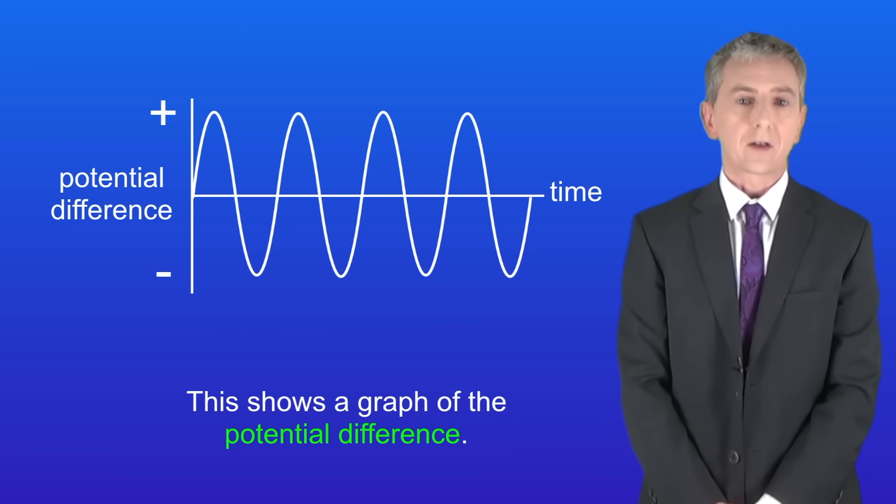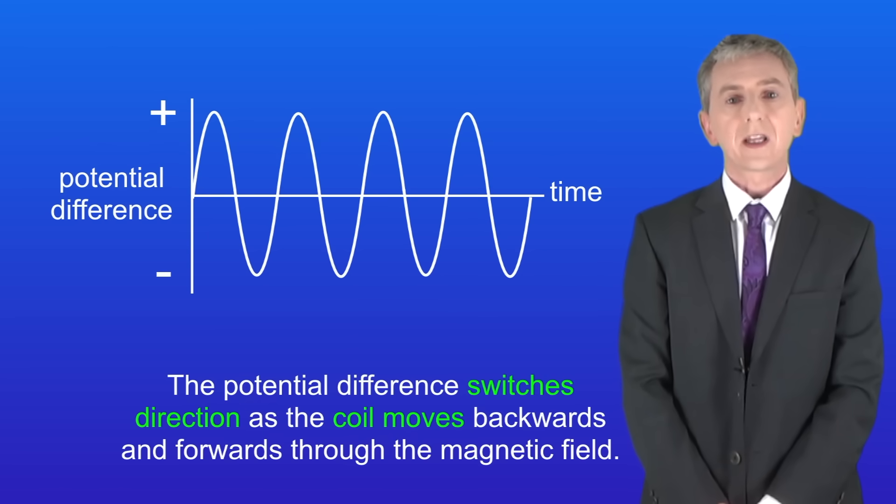I'm showing you a graph of the potential difference here. As you can see the potential difference switches direction as the coil moves backwards and forwards through the magnetic field.